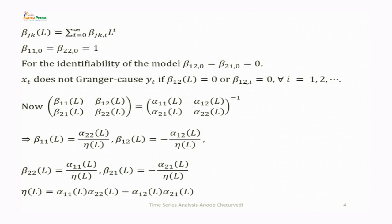For identifiability of the model, we also take β₁₂(0) or β₂₁(0) equal to 0; otherwise both models look alike and we cannot distinguish between them. Then x_t does not Granger cause y_t if β₁₂(L) = 0, or equivalently β₁₂(i) = 0 for all i.